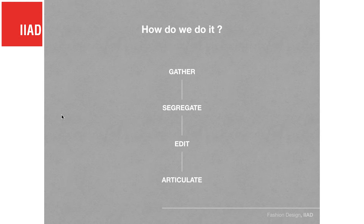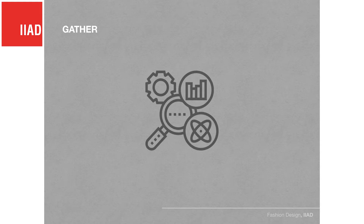How do we communicate efficiently? By the time you reach this stage, you would have quite a lot of information. Broadly, what we do is: we gather all the information, we segregate the information, then we edit the information, and then we articulate the information. The first step is to gather — you would have sketches, brainstorms, research, insights, ideas, planning, prototypes. You collect all of that as your first step. The most important part of any project is actually the body of work that we have.